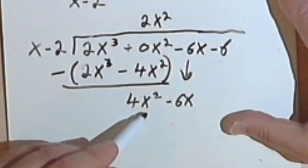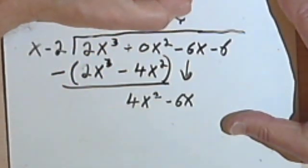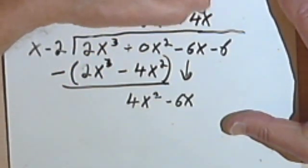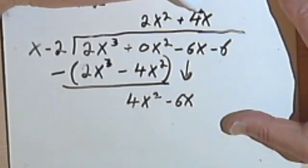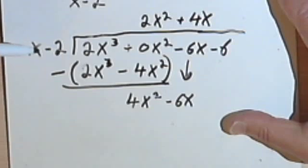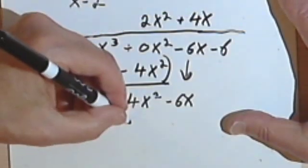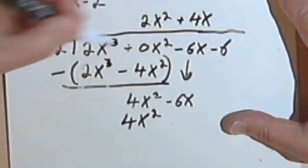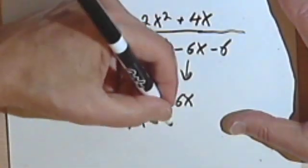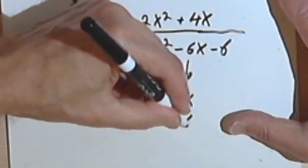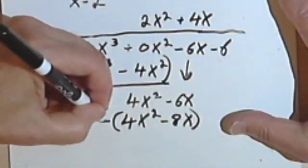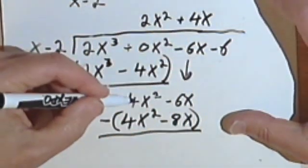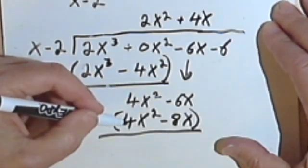Divide x into 4x squared. That will give me plus 4x. Multiplying, which is distributing this 4x across the whole divisor. 4x times x is 4x squared. These are the same. 4x times negative 2 is going to be negative 8x. I'm subtracting.